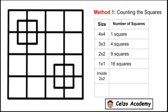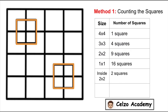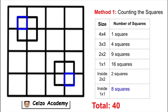Now let's put back the 2 smaller squares inside the big square. So there are 2 different squares that are 2x2 in size. Inside these 2x2 squares, how many 1x1 squares can we have all in all? 8 total, right? So if we add all the squares, we will have a total of 40 squares in this figure. That's the counting method.